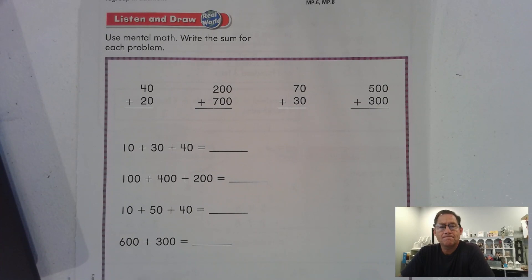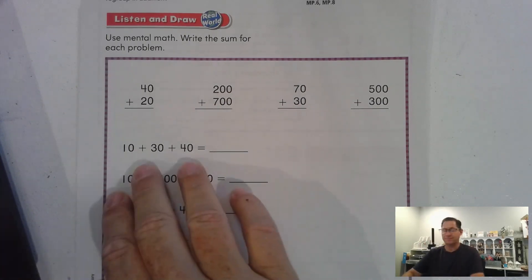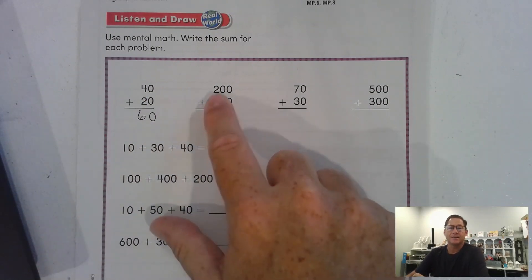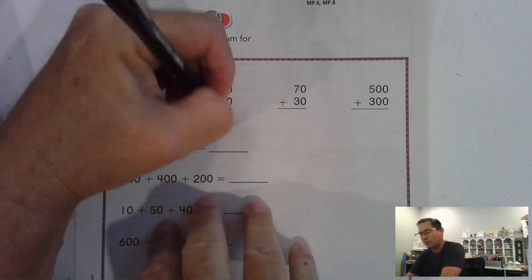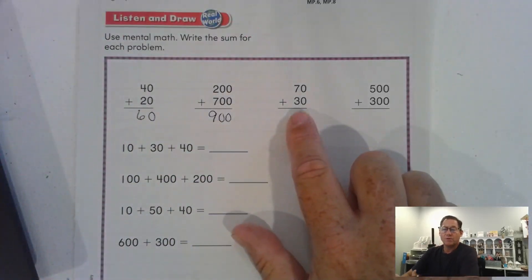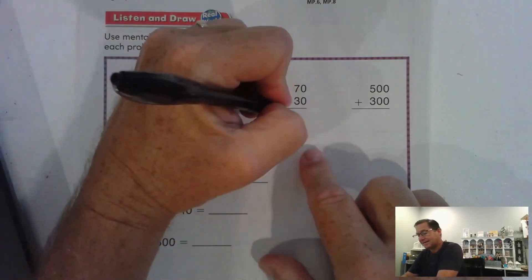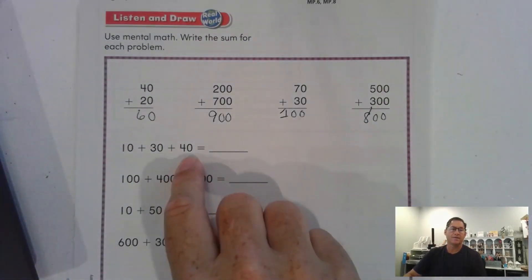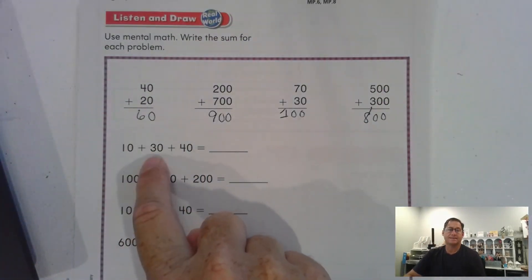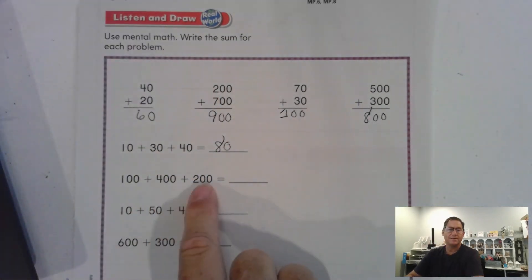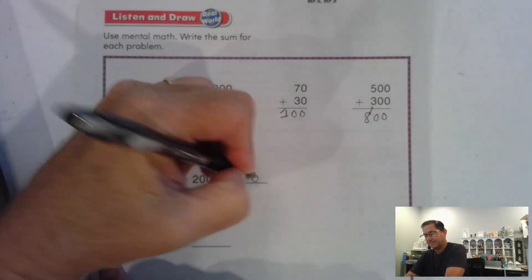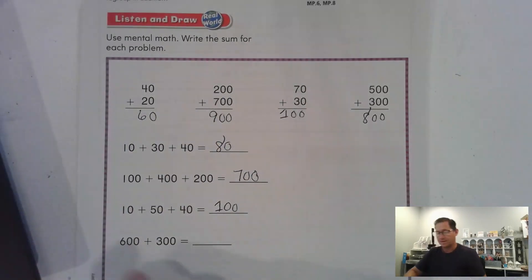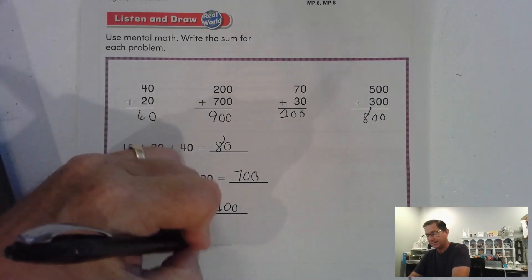How did you do? Forty and two more tens is sixty — four tens plus two tens is six tens, which is sixty. Two hundred plus seven hundred — seven hundreds and two more is nine hundred. Seventy and three more tens gives us seven and three tens is ten tens, or a hundred. Five hundred and three hundred, eight hundred. Forty, fifty, sixty, seventy, eighty. Four hundred, six hundred, seven hundred. Fifty, ninety, a hundred. Six hundred and three hundred, nine hundred.